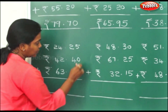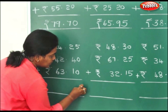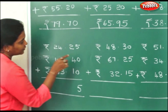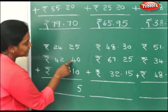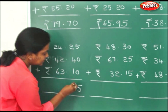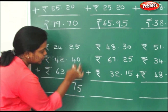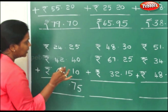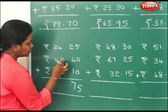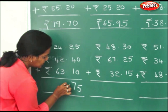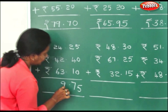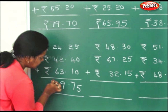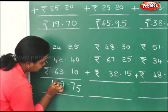5 plus 0 is 0, then 5. 2 plus 4 is 6, 6 plus 1 is 7. First we're doing the paise, then moving to the rupees. 4 plus 2 is 6, 6 plus 3 is 9. 4 plus 2 is 6, 6 plus 6 is 12.